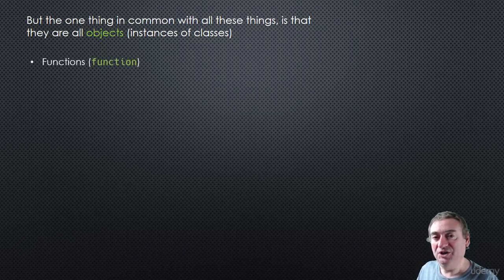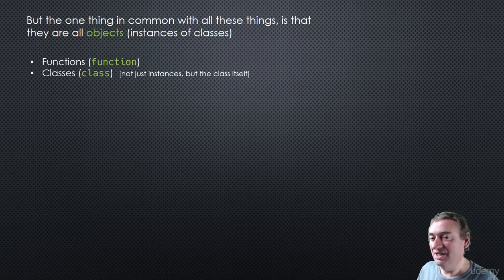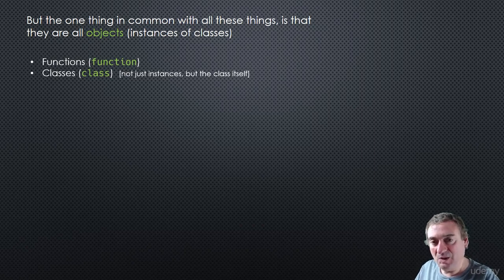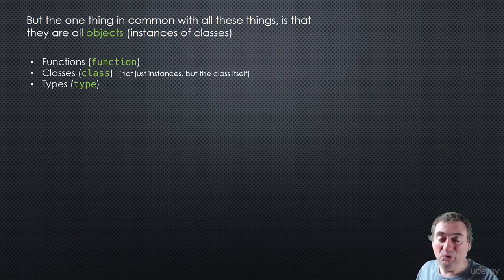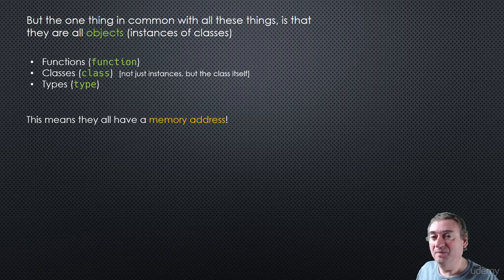For example, functions are instances of the function class - there is a class in Python named 'function' and when you create a function it is an instance of that class. Same thing with classes: a user-defined class is an object, and the class itself is an instance of the class 'type'. Same with types - type of int or type of a variable returns int, which is a class. All of these things have memory addresses.